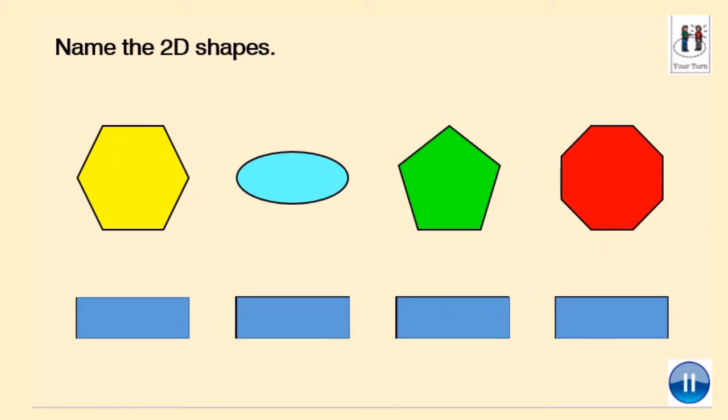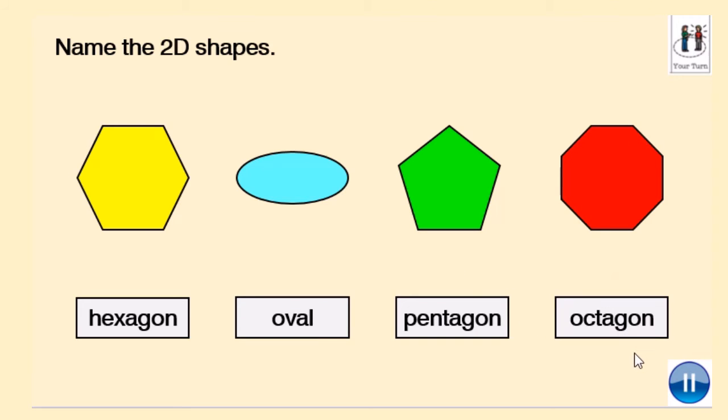Okay, name the 2D shapes. Remember, you've learned about these previously in the video. They're all just muddled up. Pause this video and write down the names of the shapes. Remember, it helps you. You can count the sides. Okay, let's see what you've come up with. We have hexagon, oval, pentagon, and an octagon. Tick or fix.